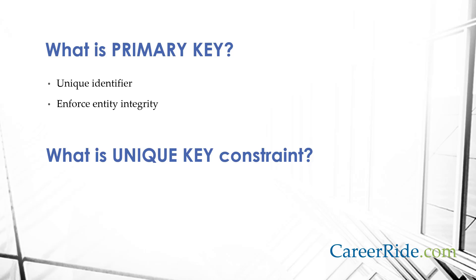What is a primary key? A primary key constraint is a unique identifier for a row within a database table. It is also used to enforce entity integrity. We can have only one primary key constraint for each table. What is a unique key constraint? A unique key constraint is created so that no duplicate values are entered, thus enforcing the uniqueness of the values in the columns.